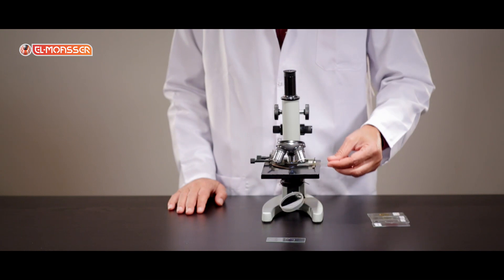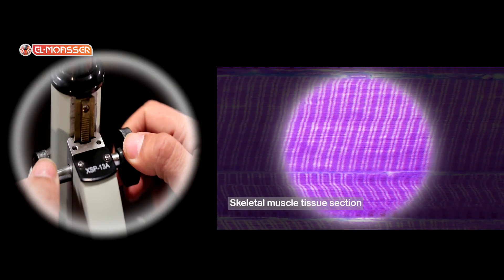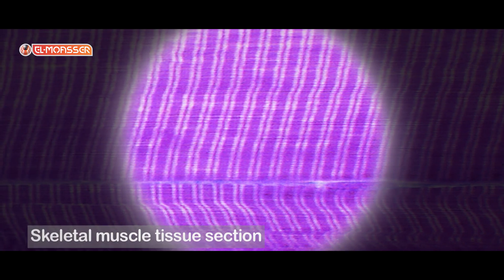Place the fifth slide on the stage. It represents the skeletal muscle tissue section. The skeletal muscle tissue consists of unbranched fibers with transverse lines.